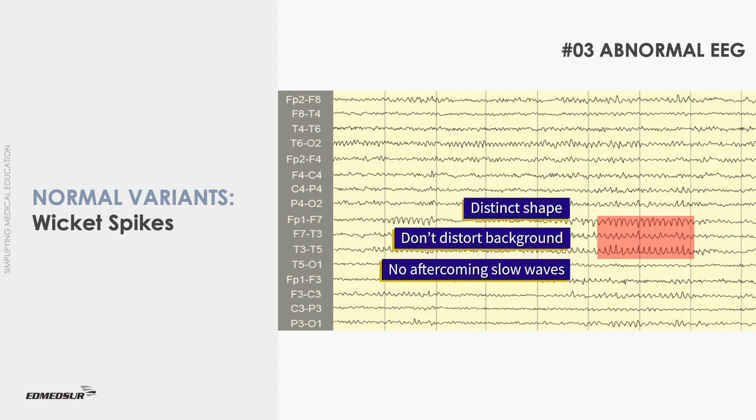In distinction to epileptiform discharges, wicket spikes have a distinct shape, they do not distort the background, and do not have an after-coming slow wave.